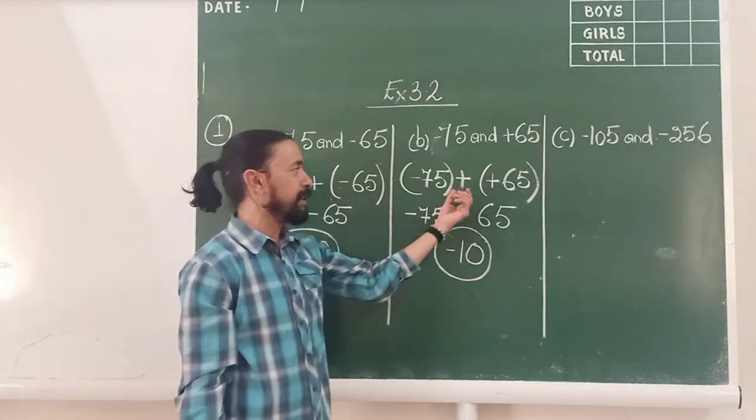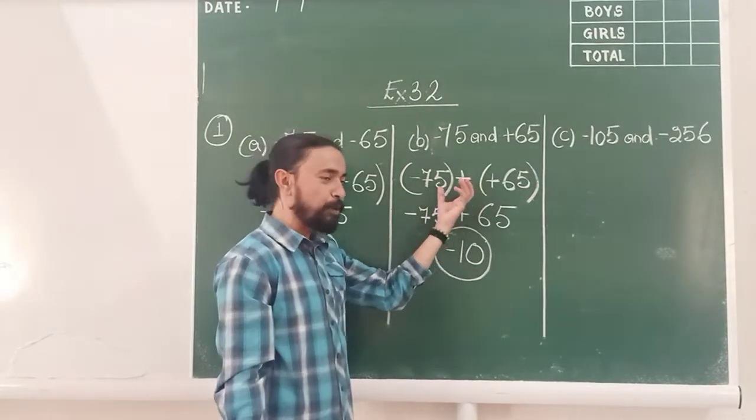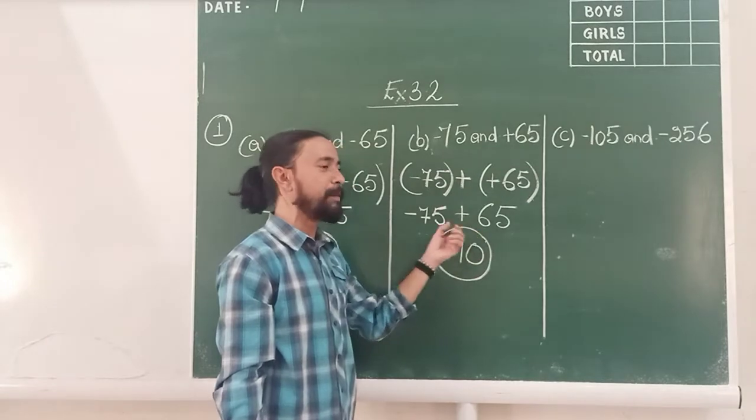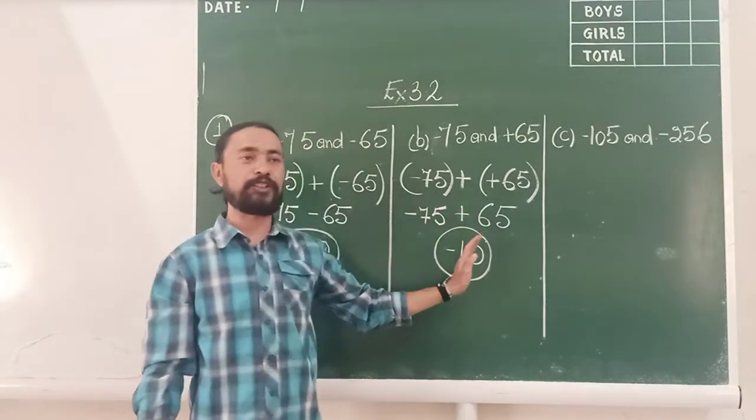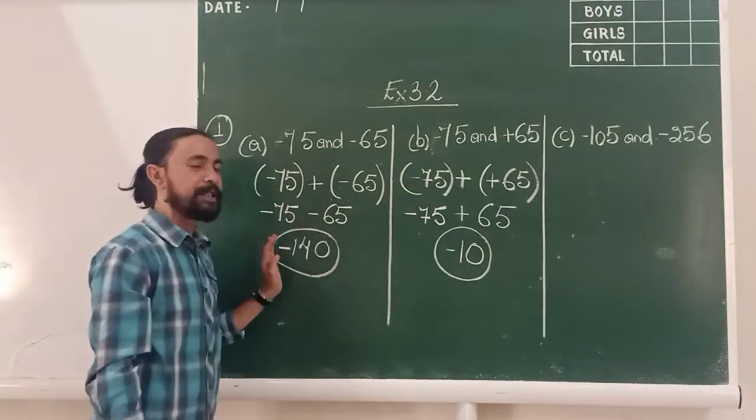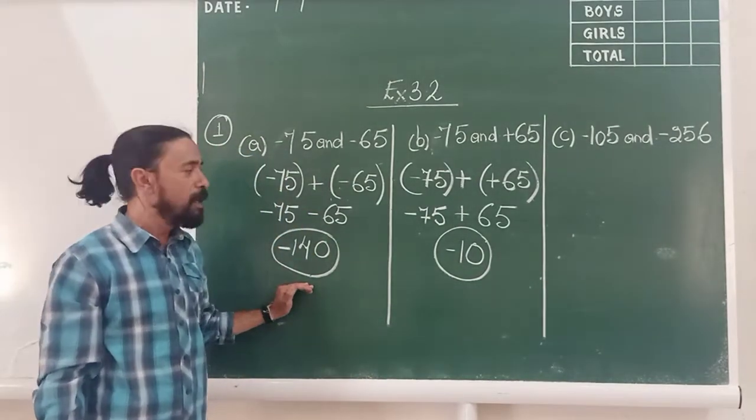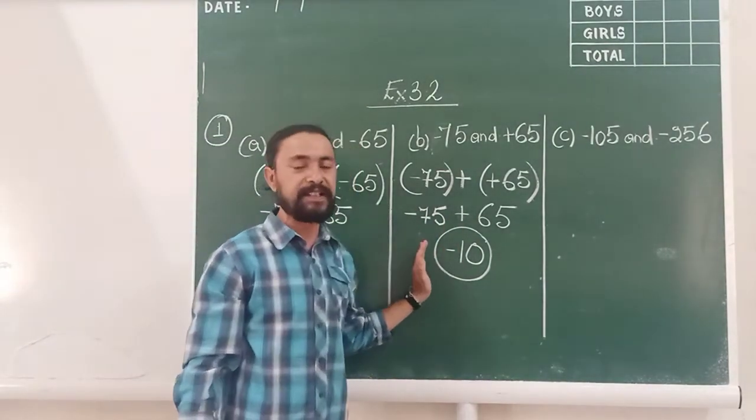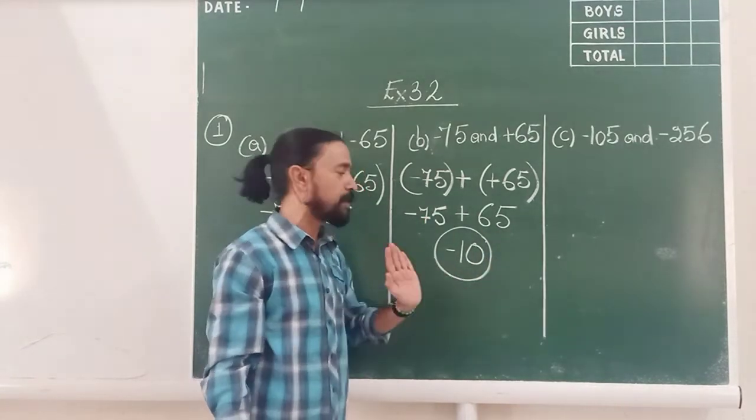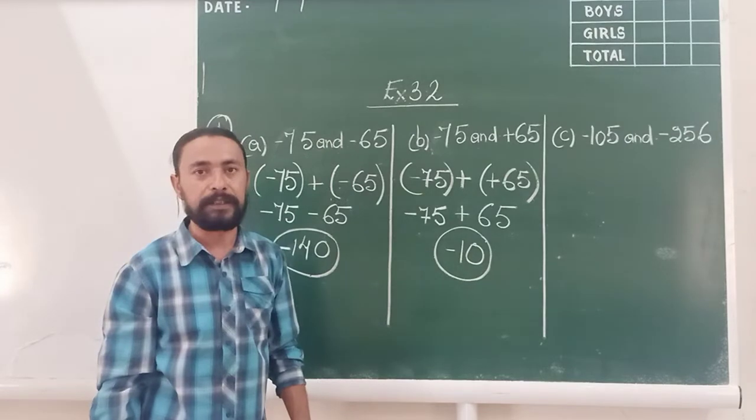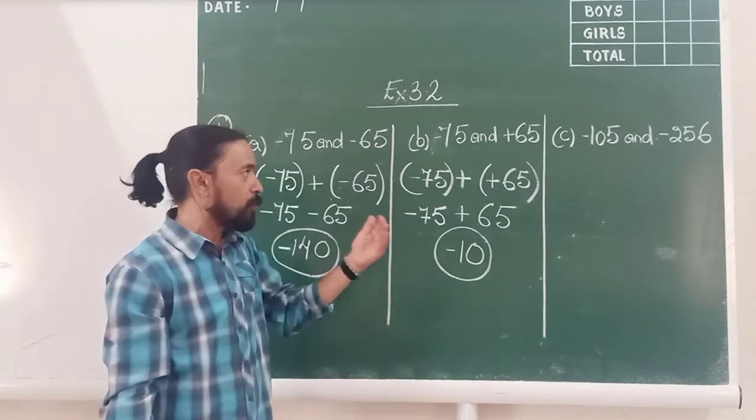So, basically, first I put them in brackets so that I can remove them and get their actual value. Once I get their actual value, if both are the same signs, I add them with the same sign. But if both are different signs, then from the greater I am supposed to take away the smaller and put the sign of the greater number. As we do more, you will understand better.